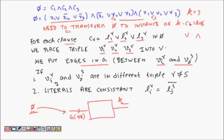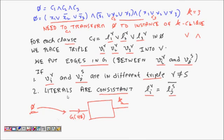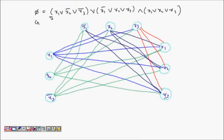Edges are added as follows: vertex vir (in clause r) is connected to vertex vjs (in clause s) if and only if two conditions hold — first, they are in different clauses (r ≠ s), and second, their corresponding literals are consistent, meaning lir is not the negation of ljs.